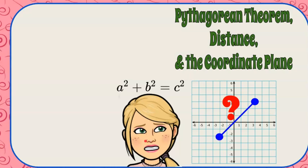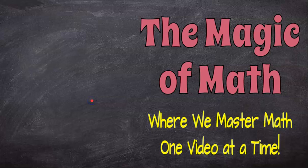There you have it. That's how you can use the Pythagorean theorem to find the distance between any two points in the coordinate plane. So go ahead and use what you know, form right triangles, and find the hypotenuse. I thank you for joining me today at the Magic of Math, where we continue to master math one video at a time. I hope you'll come back soon, and have a great day. Thank you for joining me today.